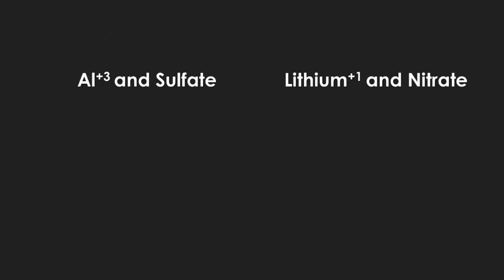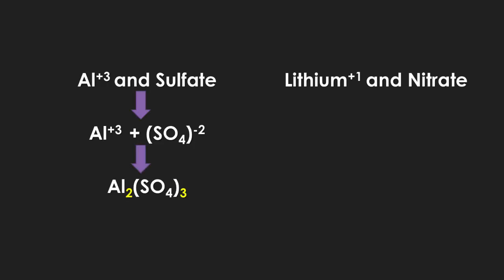Now you have aluminum mixed with sulfate. Aluminum has a positive three charge and sulfate has a negative two charge. The SO₄ formula does not change — you do not alter SO₄. Find the LCM, which is again six. That means you need two aluminums for every three groups of sulfate, giving Al₂(SO₄)₃. For lithium — positive one charge — and nitrate, which also has a negative one charge, you only need one of each, giving LiNO₃.